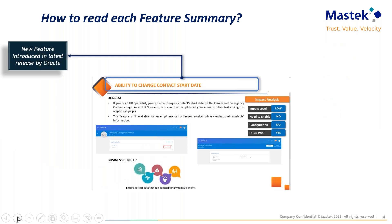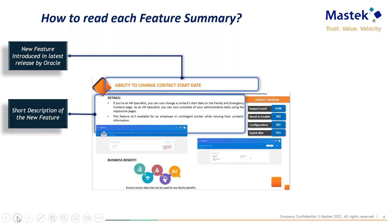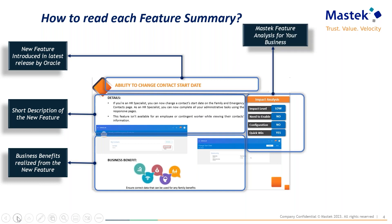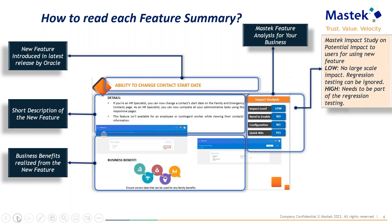This is to give you a glimpse of how we have crafted the structure of this session. The first thing you'll see is a list of new features coming into 23B, detailing the features so you get a brief understanding of what they are about. Next is the business benefits and important takeaways for you as a decision maker. There are four components where we have done in-depth analysis for the features we are going to present today. The first is impact level analysis, which demonstrates the impact on the end user. If it's low impact, regression testing can be avoided; if it's high impact, regression testing is needed.